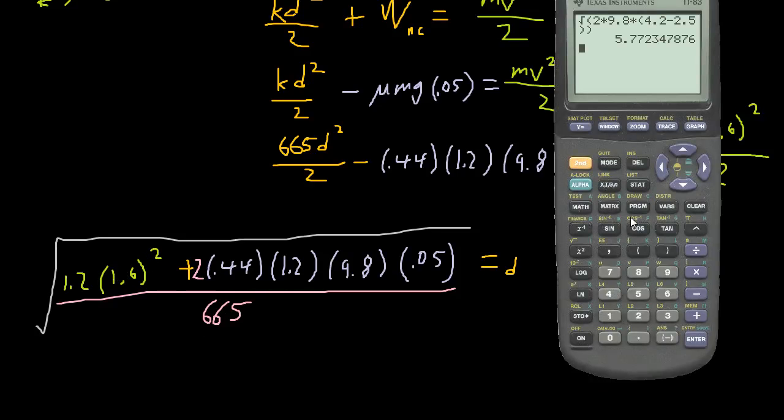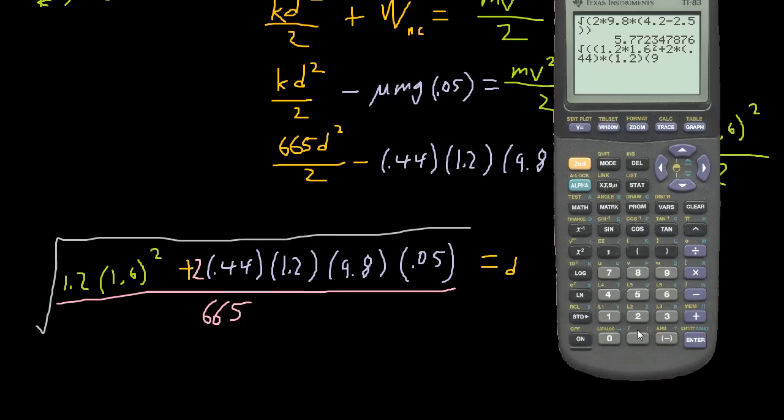So the square root of the numerator, which is 1.2 times 1.6 squared, plus 2 times 0.44 times 1.2 times 9.8 times 0.05. So that's the numerator.